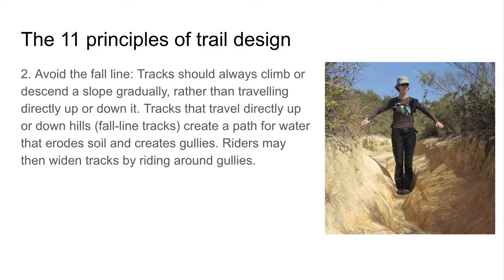The second principle: avoiding the fall lines. Tracks should always climb or descend a slope gradually rather than traveling up or down directly. This means an easier path for mountain bikers, and it also leads to less water erosion. Excess rain might lead to erosion and loss of soil. Tracks might develop small gullies, which creates dangerous situations for mountain bikers and causes significant soil loss.